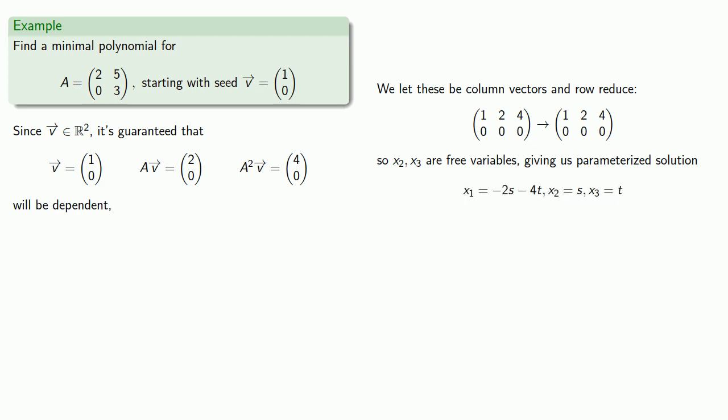Now, remember, our goal is to find a minimal polynomial, a least degree polynomial. And so if x_3 is anything, we'll have an A squared V. So let's let T equals 0 and S equal 1. And this gives us a solution.